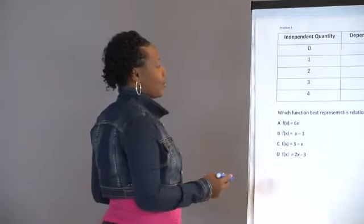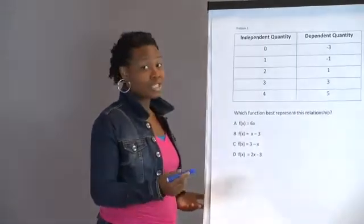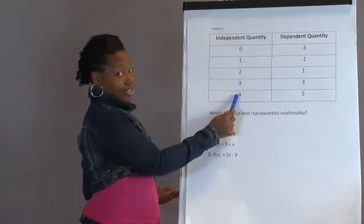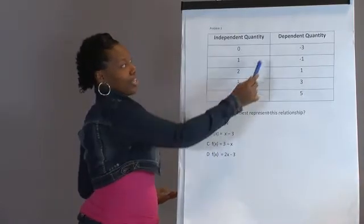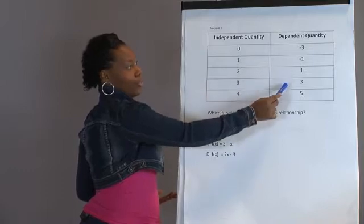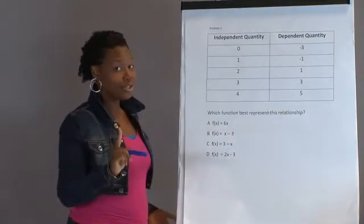Problem number one says which function best represents this relationship. If you're given a table, independent quantities you see the numbers 0, 1, 2, 3, 4. Dependent quantity, the numbers negative 3, negative 1, 1, 3, and 5. So here's the first thing you have to know.